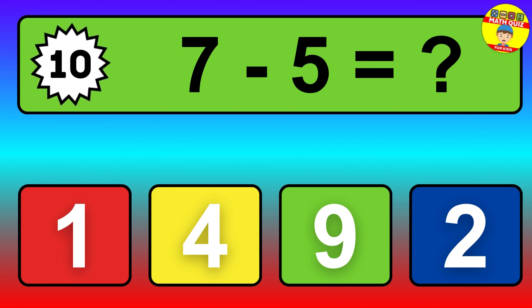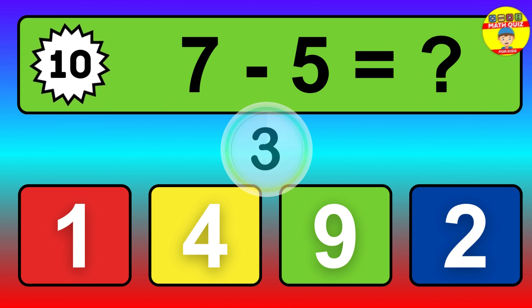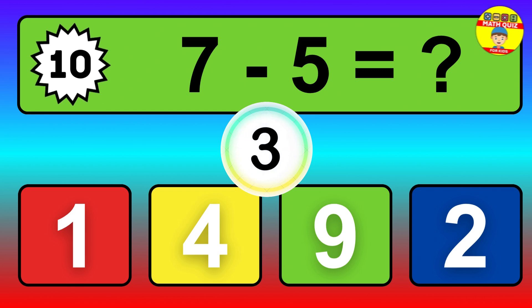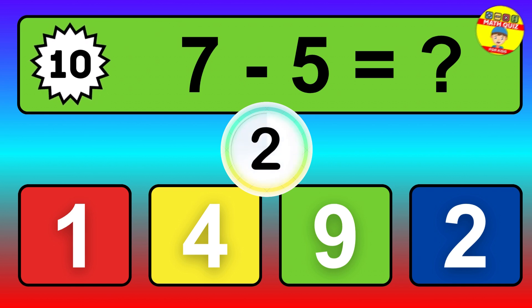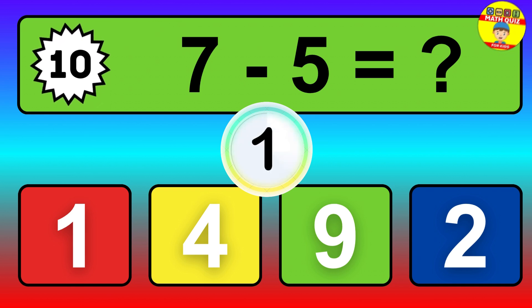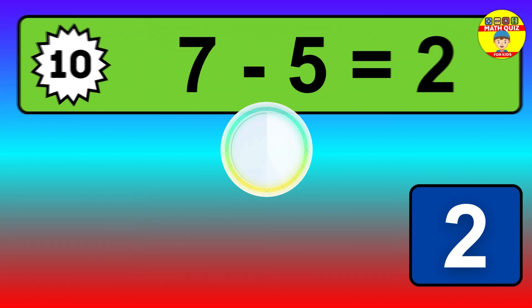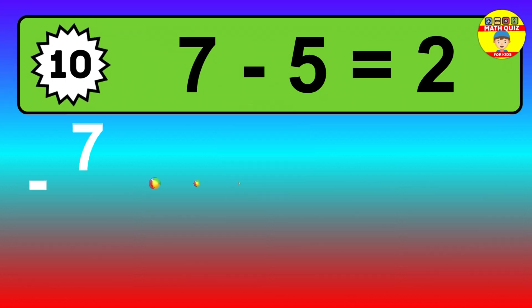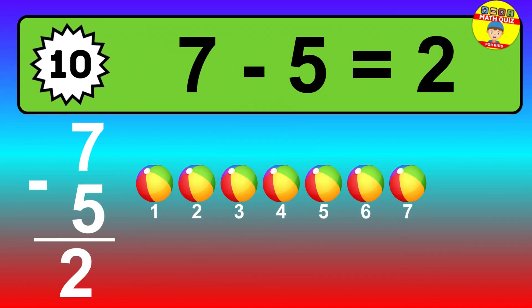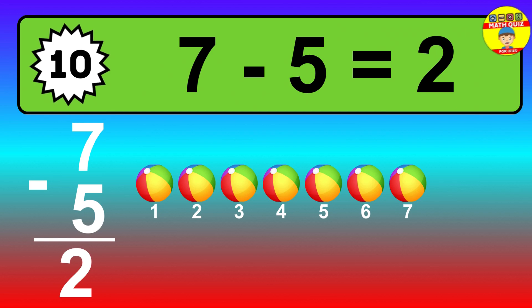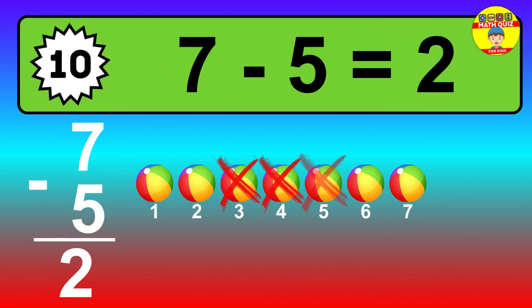Question 10. 7 minus 5 equals what? So the answer is 7 minus 5 is 2. Let's count it.